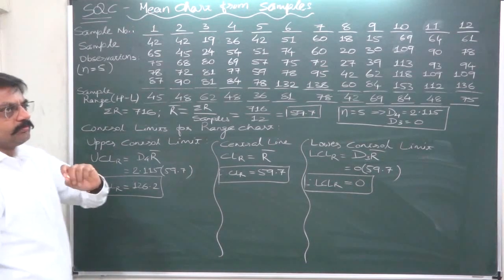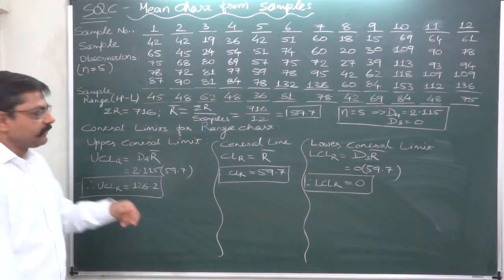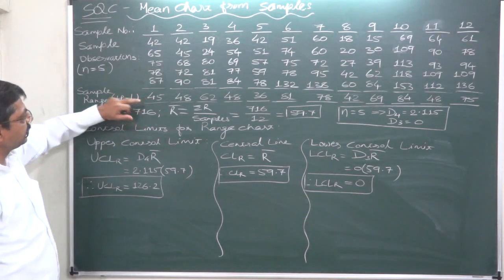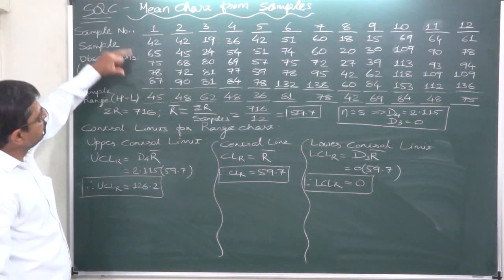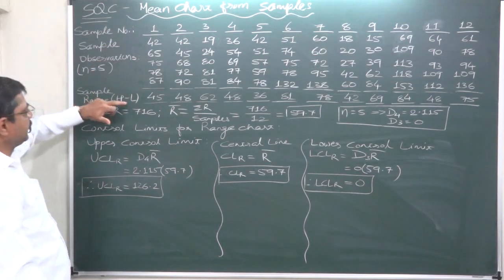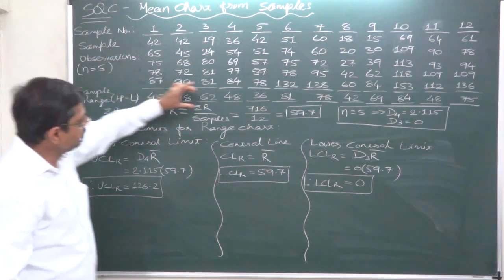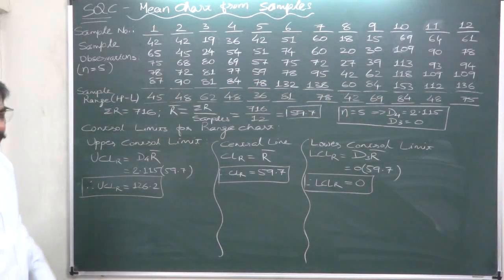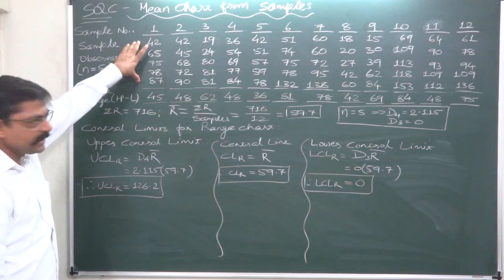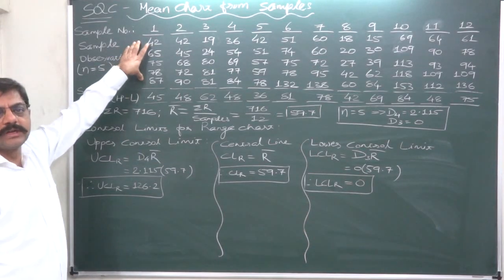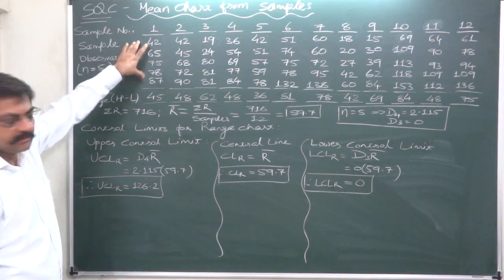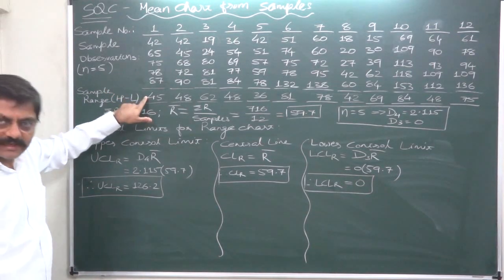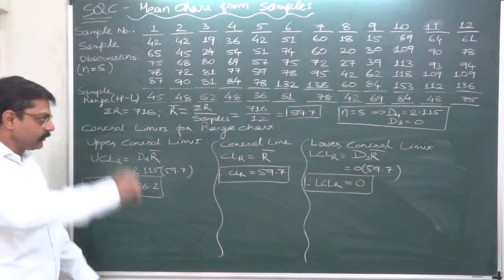To draw a mean chart as well as range chart, we should have sample ranges. Sample range is nothing but the difference between the highest sample value and the lowest sample value, H minus L. I have already written the sample ranges. So this is the first step for solving a problem where we have sample information and want to construct a range chart: find out the sample range, highest sample value minus lowest sample value.